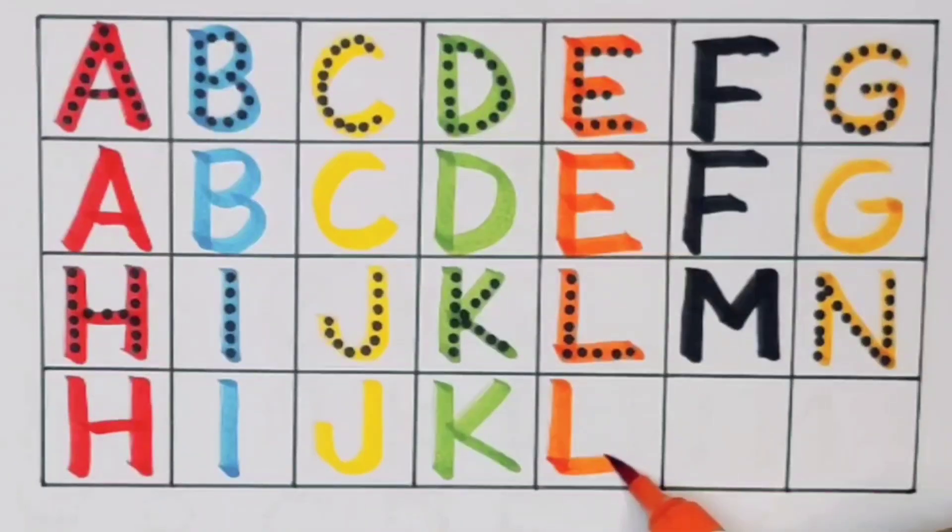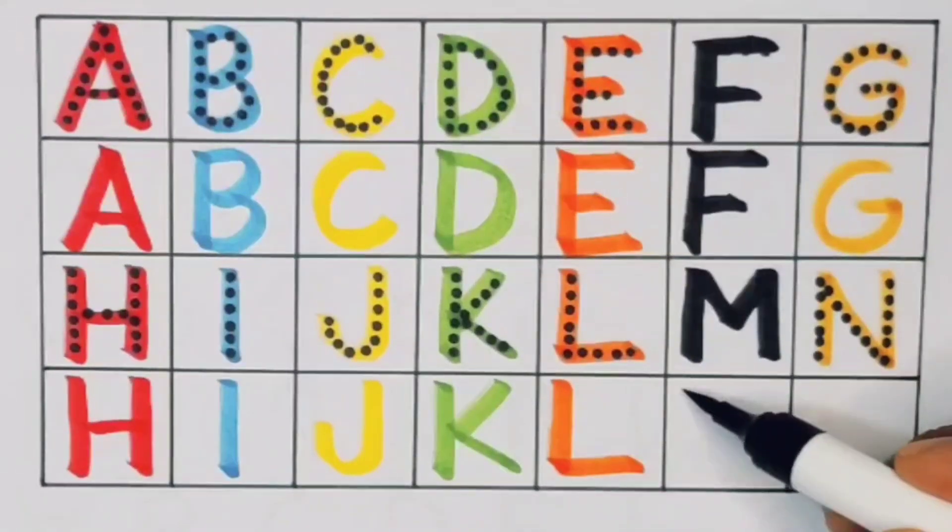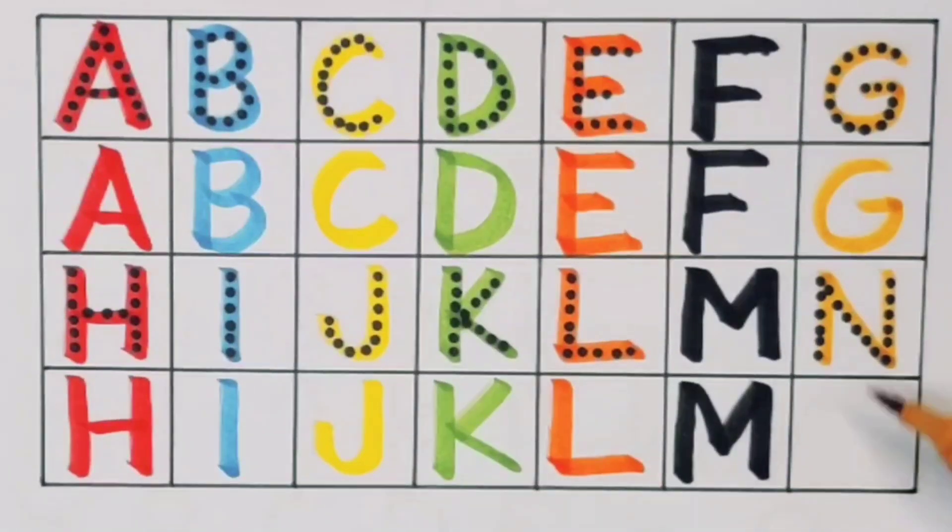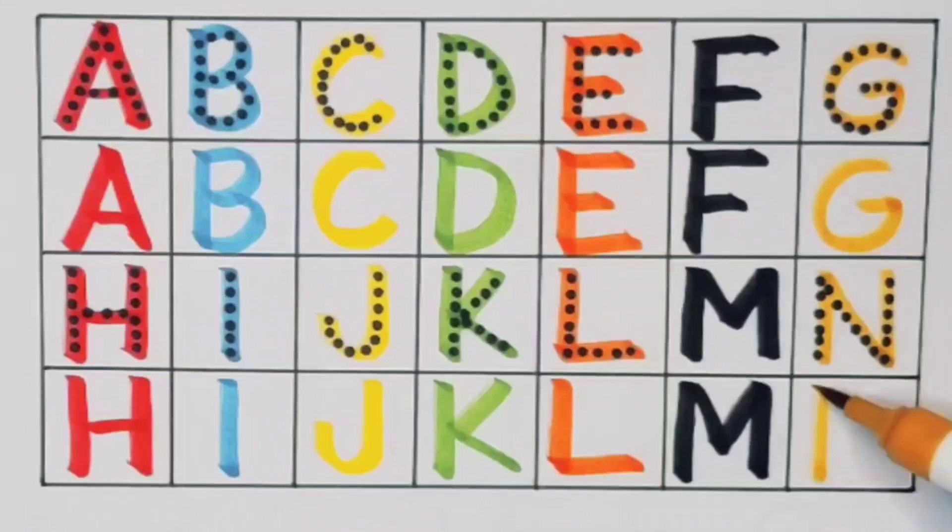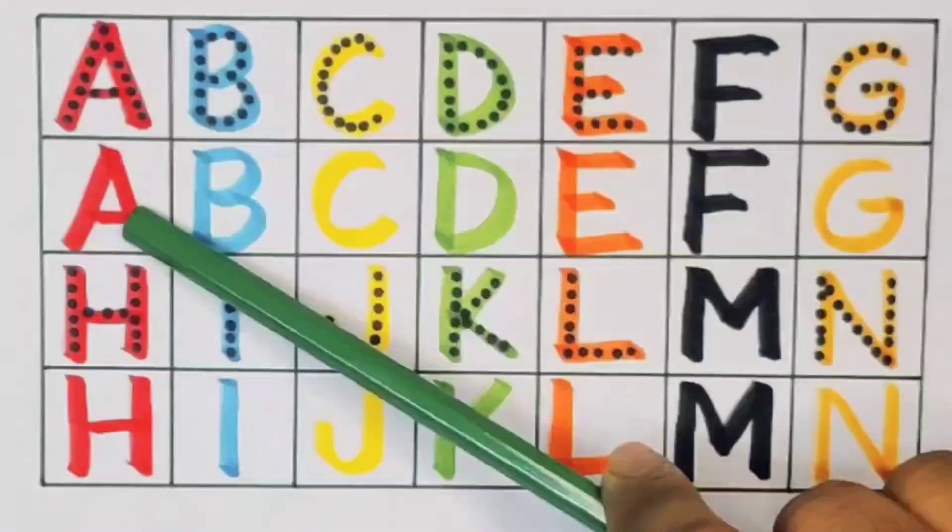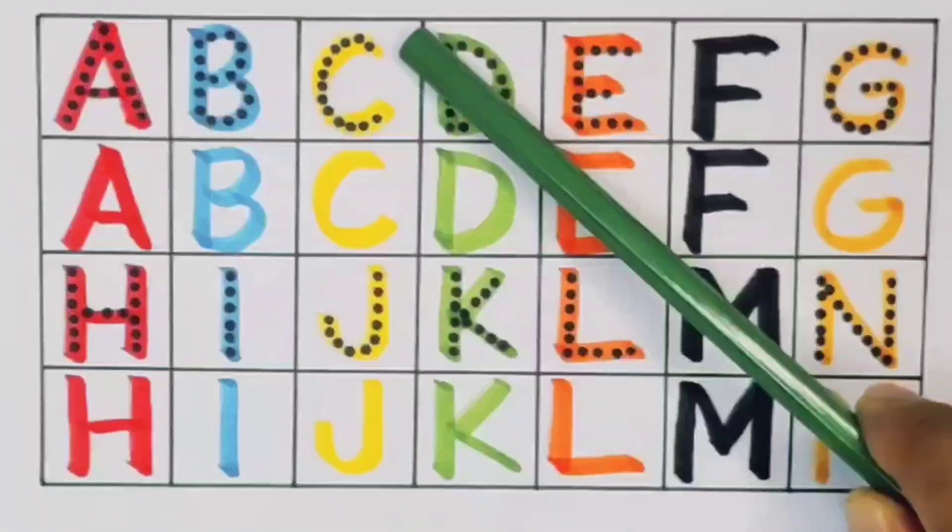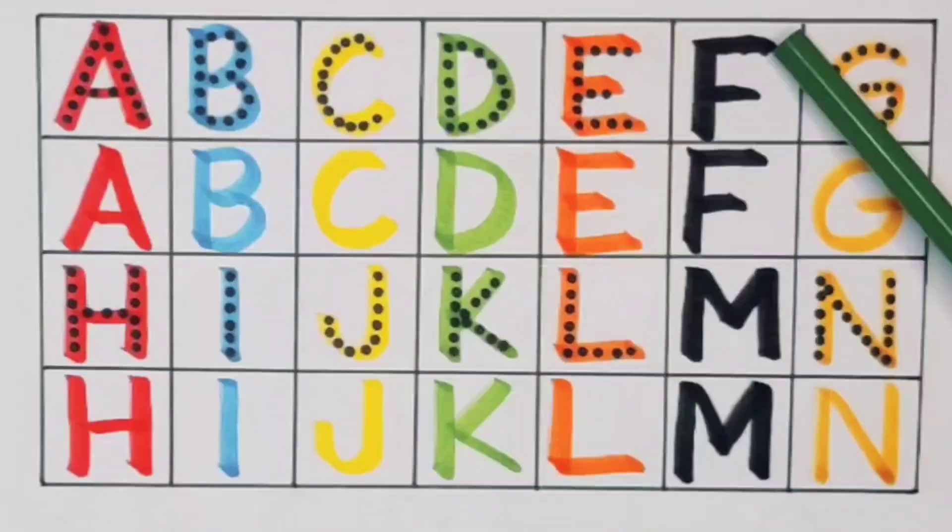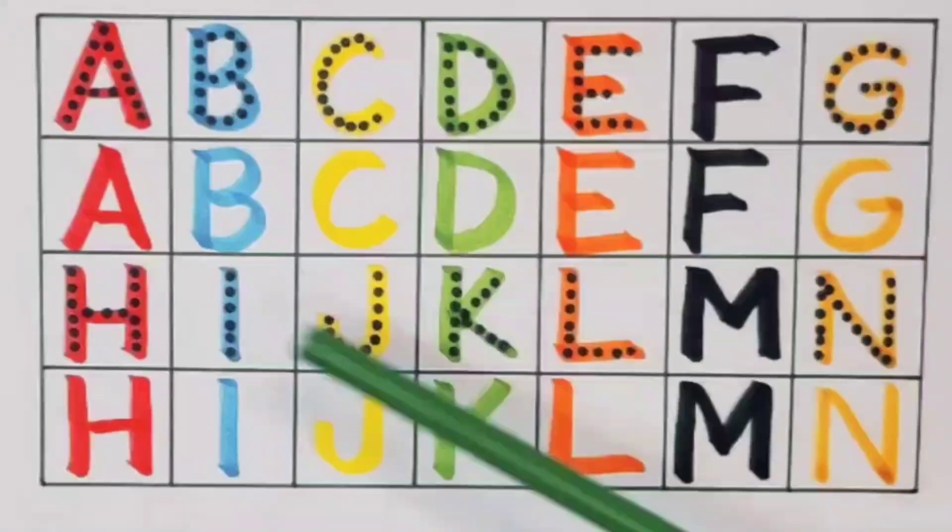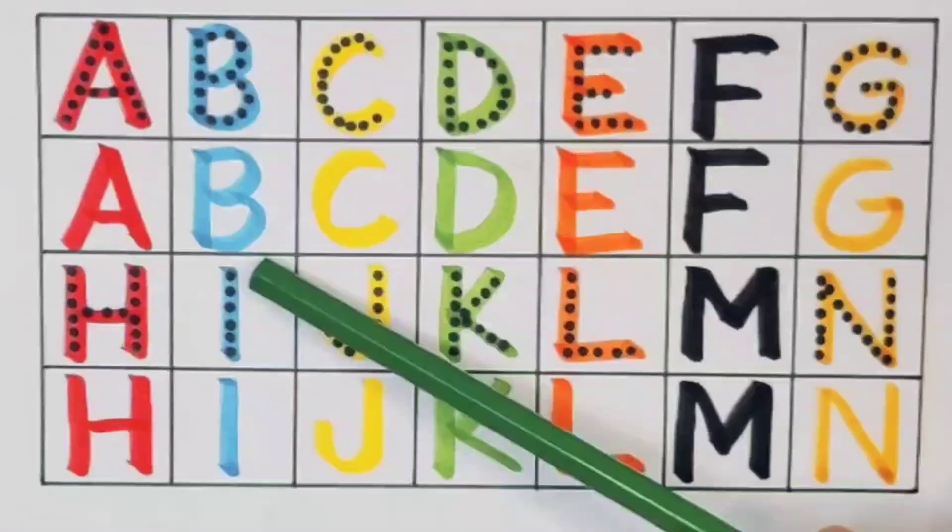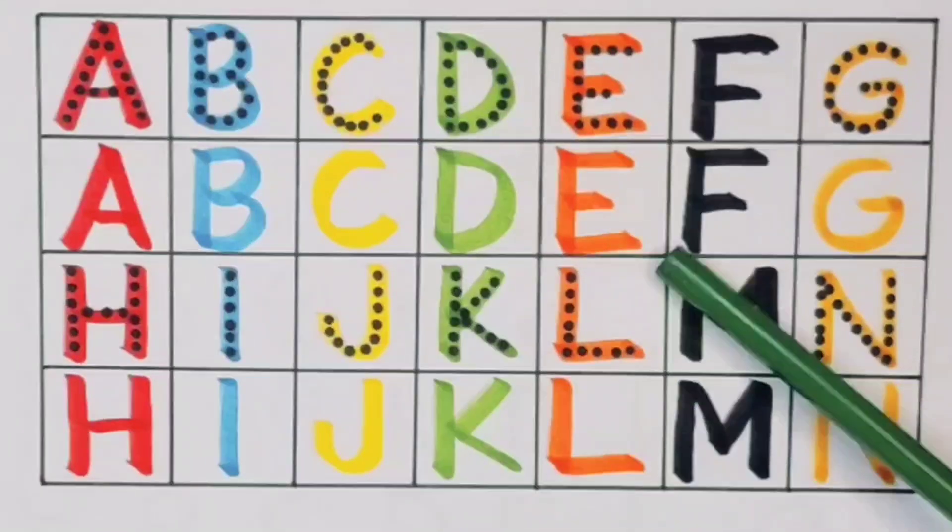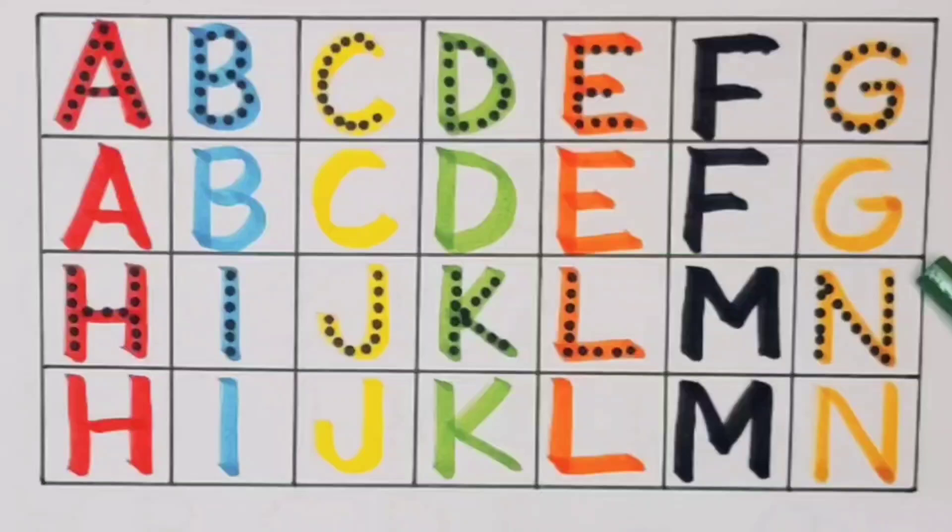K for key, L for lion, M for mouse, N for net. Full alphabet review: A for aeroplane, B for bus, C for cow, D for drum, E for egg, F for fire, G for gorilla, H for helicopter, I for insect, J for Jack, K for key, L for lion, M for mouse, N for net.